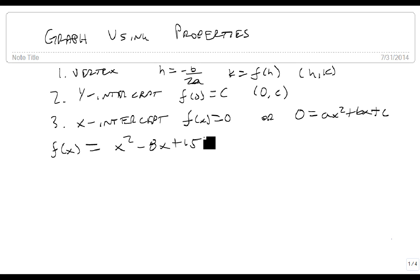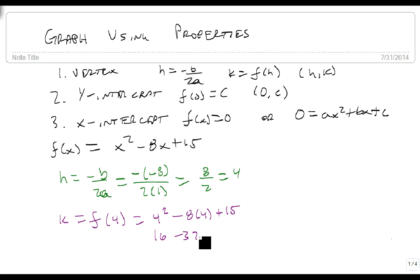So what we need to do here is first find our vertex. We're going to let h equal minus b over 2a, which is minus a minus 8 over 2 times 1, 8 over 2, which is 4. Now we find k by plugging that 4 back in to get 4 squared minus 8 times 4 plus 15, which is 16 minus 32 plus 15, 31 minus 32, so this is minus 1. So our vertex hk is (4, -1).